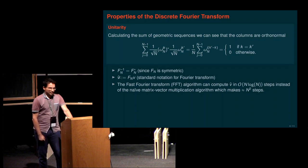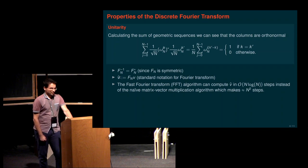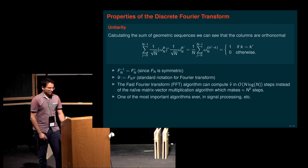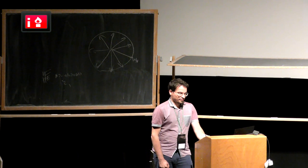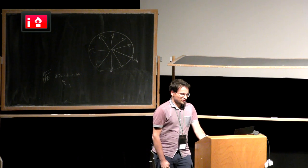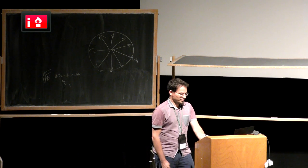There is an important classical algorithm, the fast Fourier transform, which can compute this Fourier transform vector in only N log N steps - much improved compared to the naive matrix-vector multiplication requiring N-squared steps. Using this clever algorithm, you can get away with N log N steps instead. This fast Fourier transform algorithm is really important not only in quantum computing but also in classical computer science - it's very widely used in signal processing, whenever you do MRI imaging or similar applications.